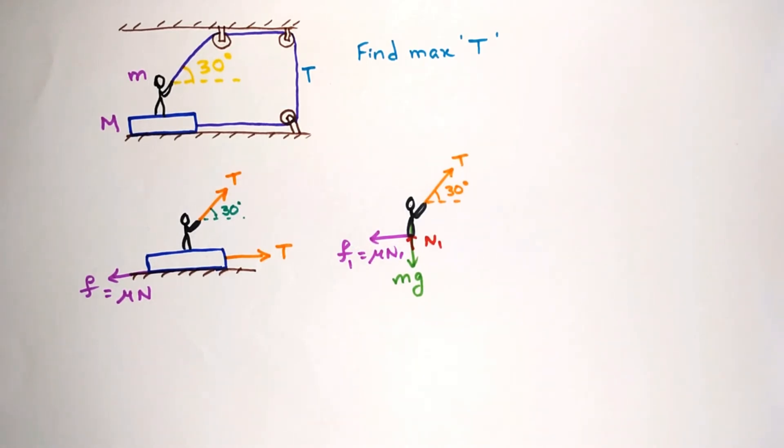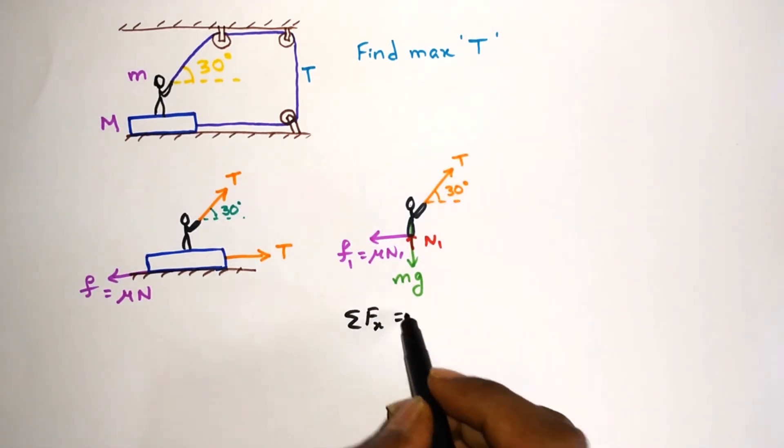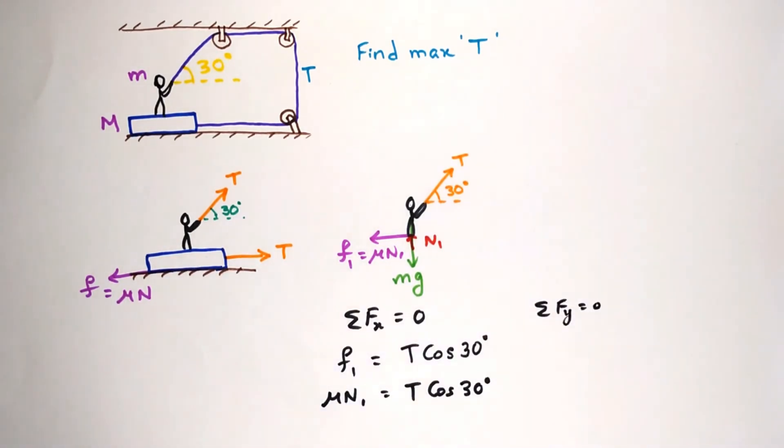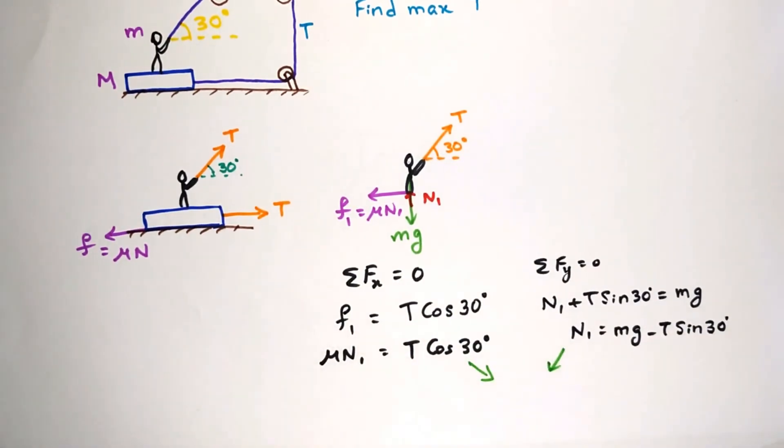For the equilibrium state the net force acting on the person should be 0. So ΣFx = 0 which gives μN1 = Tcos30°. And ΣFy = 0 which gives N1 = mg - Tsin30°. Solving these two equations we get T = μmg/(cos30° + μsin30°). This tension force is the maximum tension for the person to remain stationary.